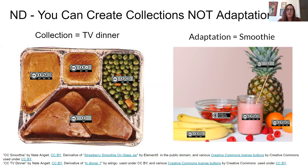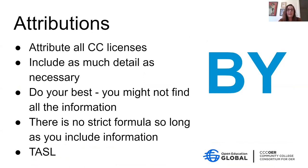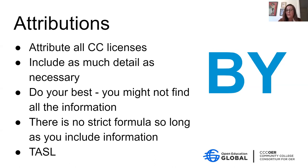In my last few minutes I'm going to talk about attributions. Every Creative Commons license needs to be attributed to the creator. You can think of them as similar to citations, but they're a lot easier. You want to think about the reader or user of the resource — include as much detail as necessary so they can reuse the work or find the original. You might not find all the information for an attribution, so just include what you can. There's no strict formula like a citation — you just have to include some minimal information.